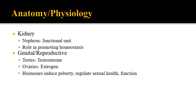The kidneys help with red blood cell production and regulating calcium levels. We'll also be talking about the genital and reproductive system — the testes and their role in producing testosterone, the ovaries with estrogen — and their purpose in inducing puberty and regulating sexual health and function. If there's any damage to the kidneys, that affects their ability to filter, causing a buildup of metabolic byproducts, which can indirectly cause changes to the cardiovascular and neurological systems.